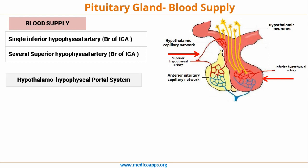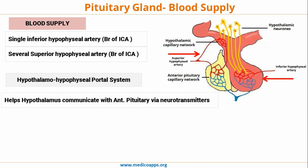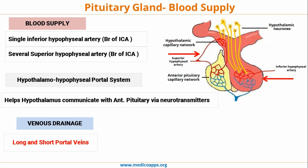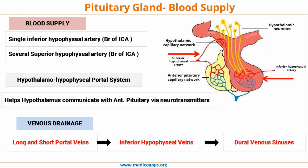An important concept is the Hypothalamo-Hypophysial Portal System. This system helps the Hypothalamus communicate with the anterior Pituitary via neurotransmitters. It starts in the Hypothalamus and ends in the anterior Pituitary. The venous drainage consists of long and short portal veins, which drain into inferior Hypophysial Veins and finally into the Dural Venous Sinuses such as the Cavernous Sinus.